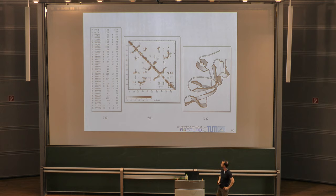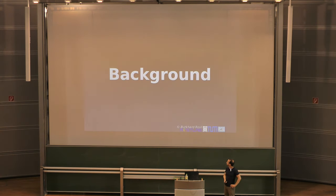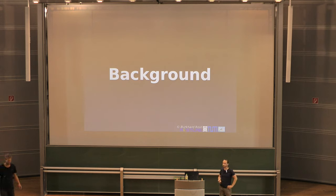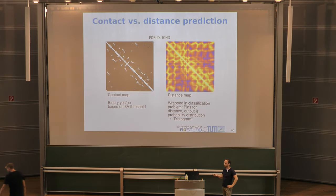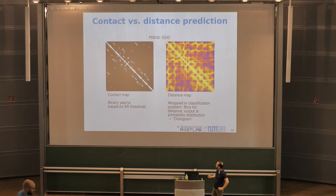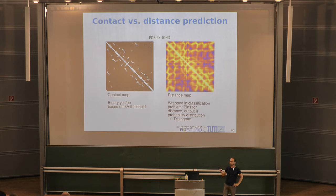Keep that in mind because we will talk about it when we come to metrics for measuring the quality of a predictor. I'll first give some background on contact and distance prediction in general, and give a short introduction to deep learning. For one PDB ID — 1CHD — you can see both a contact map and a distance map. There's a big difference between them: for a contact map it's binary, just black and white. We want to know if there's a contact or no contact.